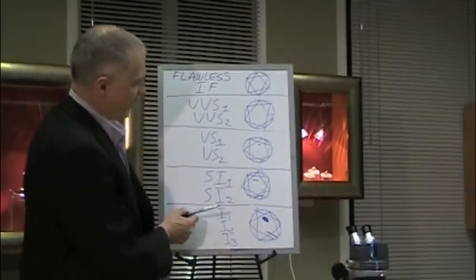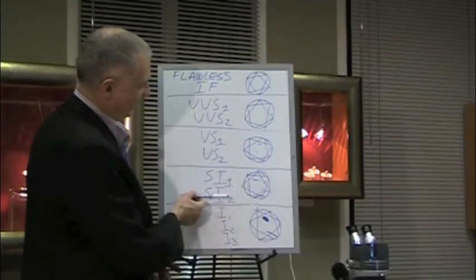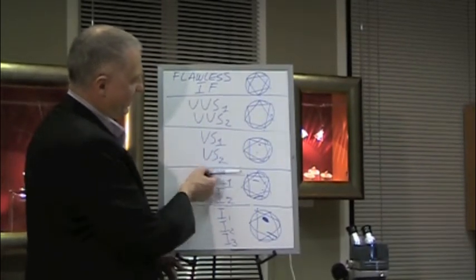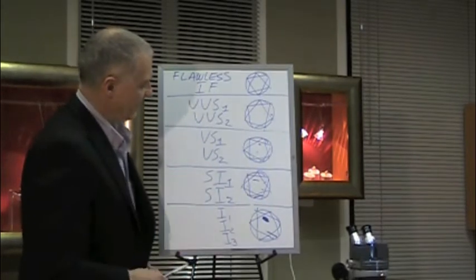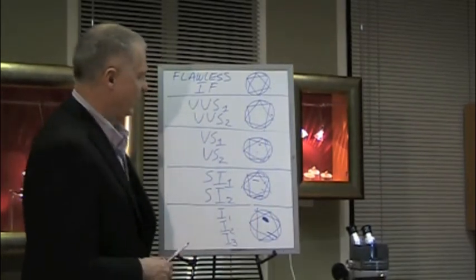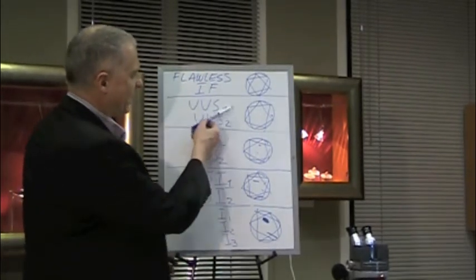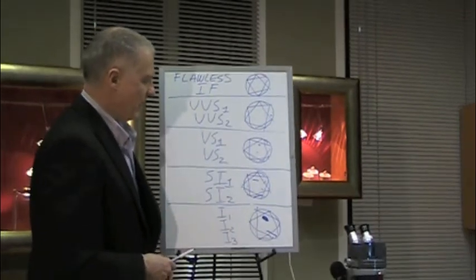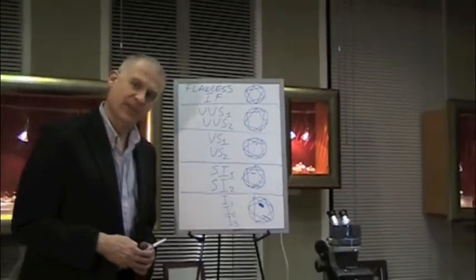So generally we recommend SI2 and higher. And your best value, and I think the best two grades to concentrate on, is SI1 and VS2. You have a relatively nice clarity range, you can't see it with the eye, and you're not paying a huge premium. That's basically clarity grading in a nutshell. Thank you.